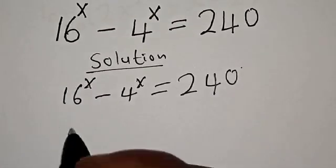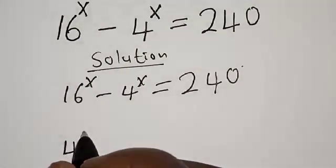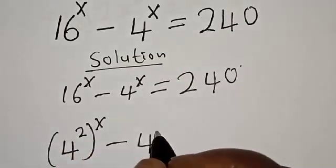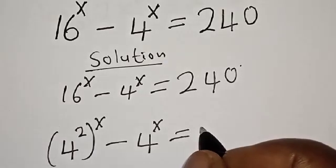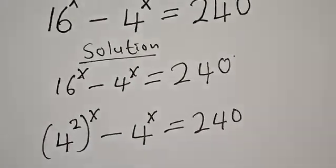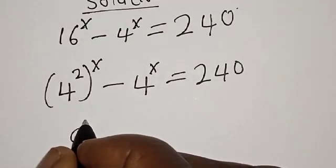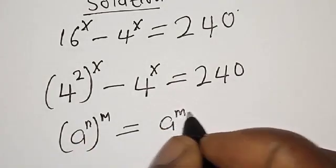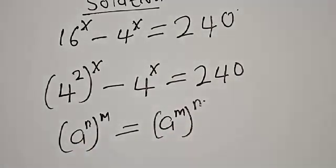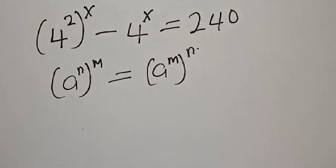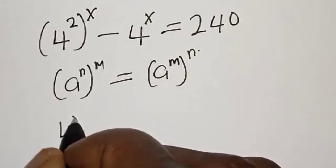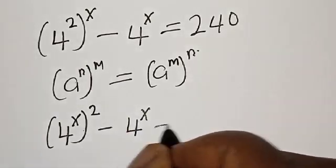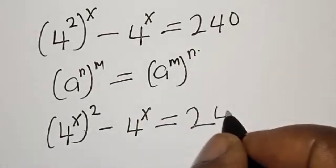Then 16 raised to power s can be expressed as 4 squared raised to power s, minus 4 raised to power s, is equal to 240. Remember, if you have a raised to power n raised to power m, it is simply a raised to power m times n. Then we have 4 raised to power 2s minus 4 raised to power s is equal to 240.